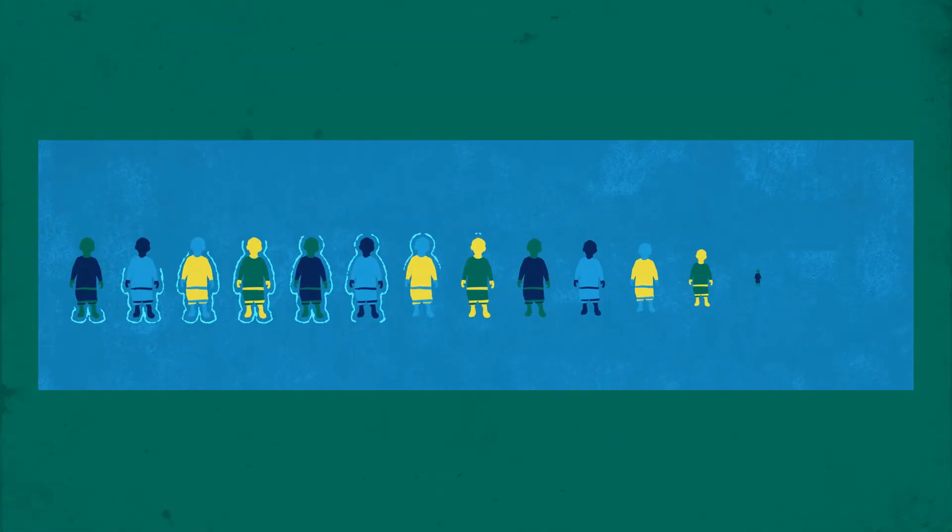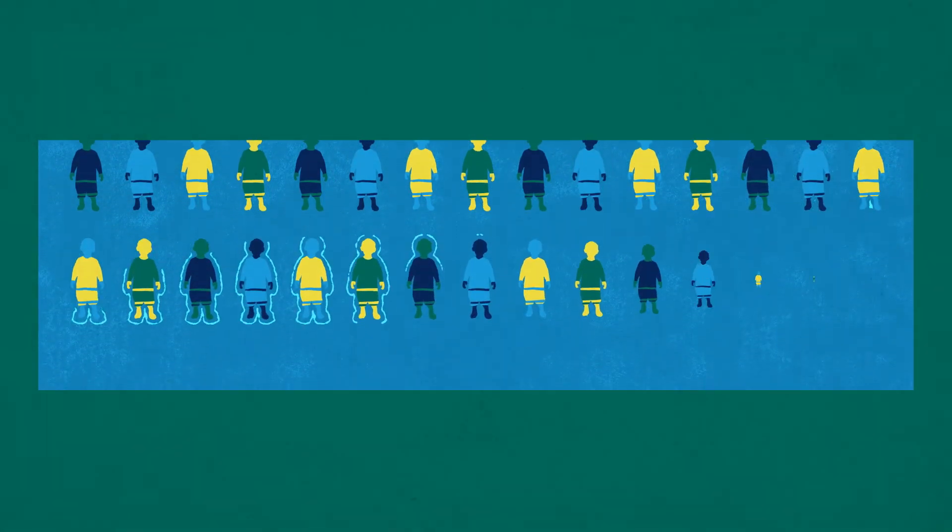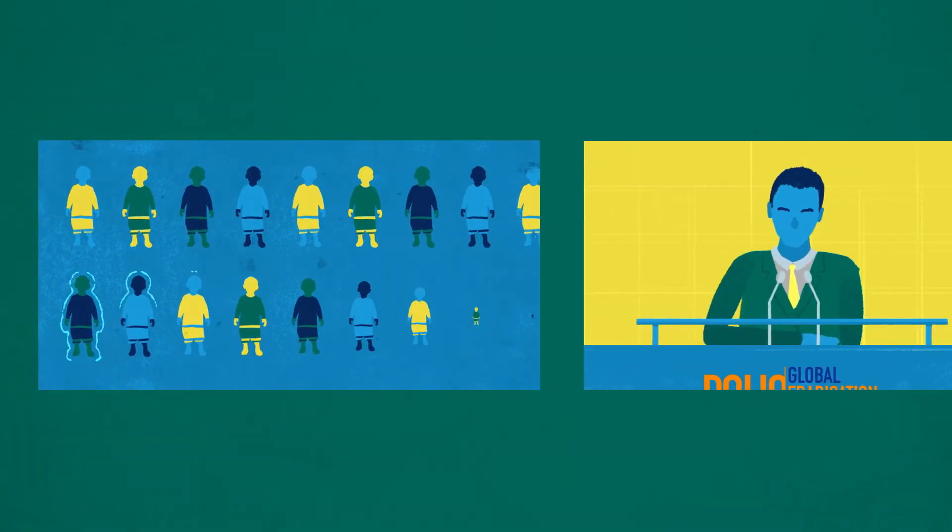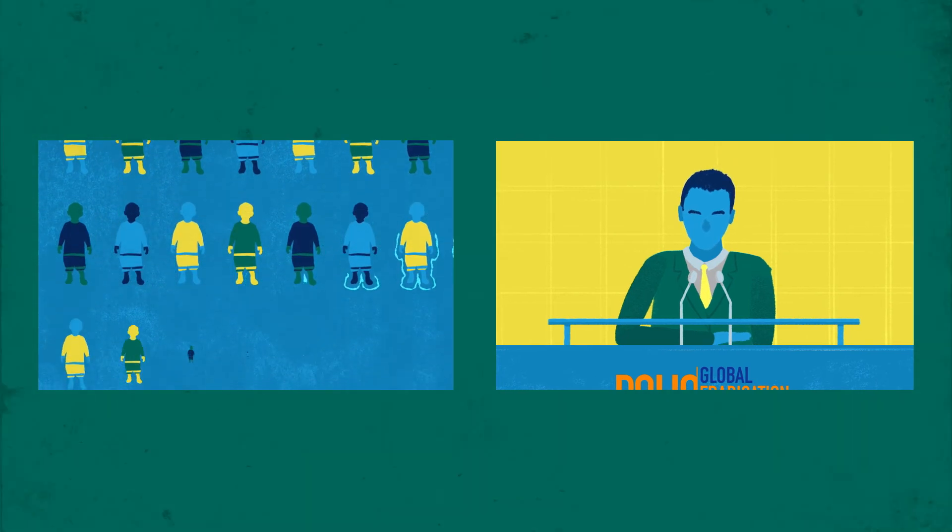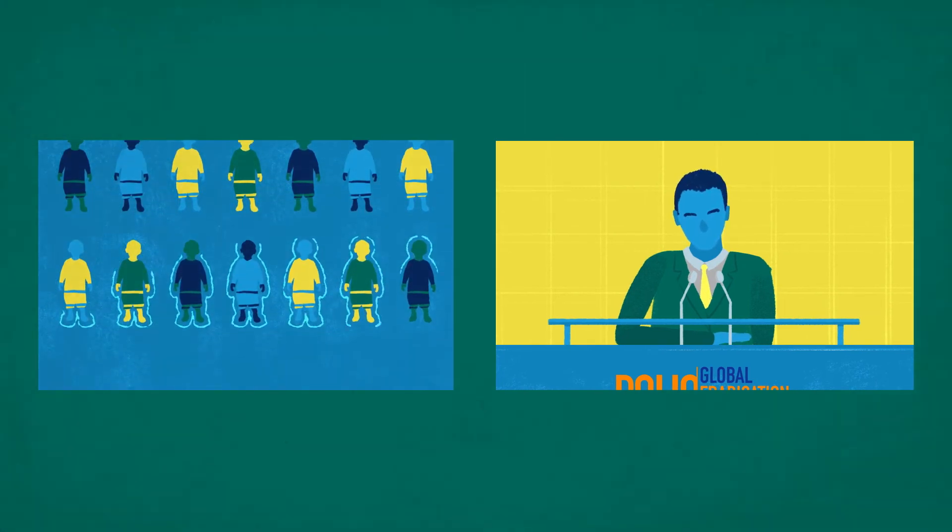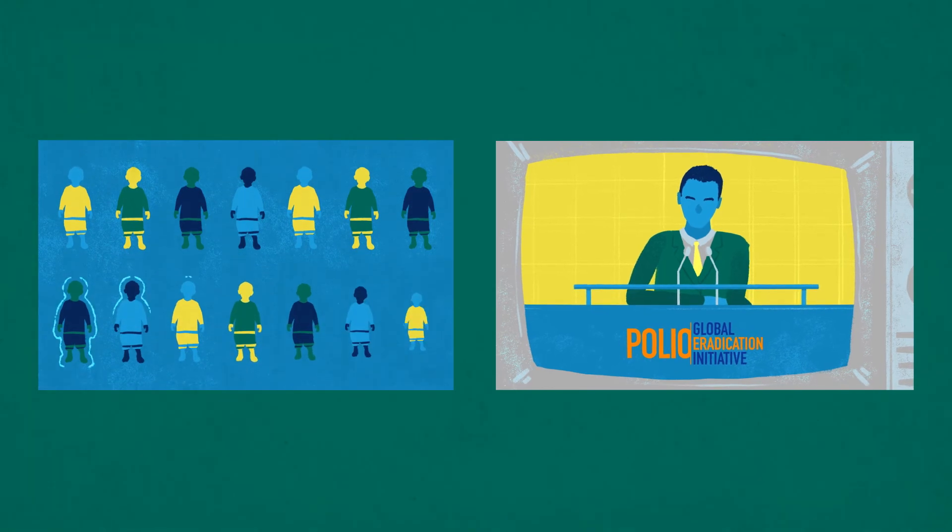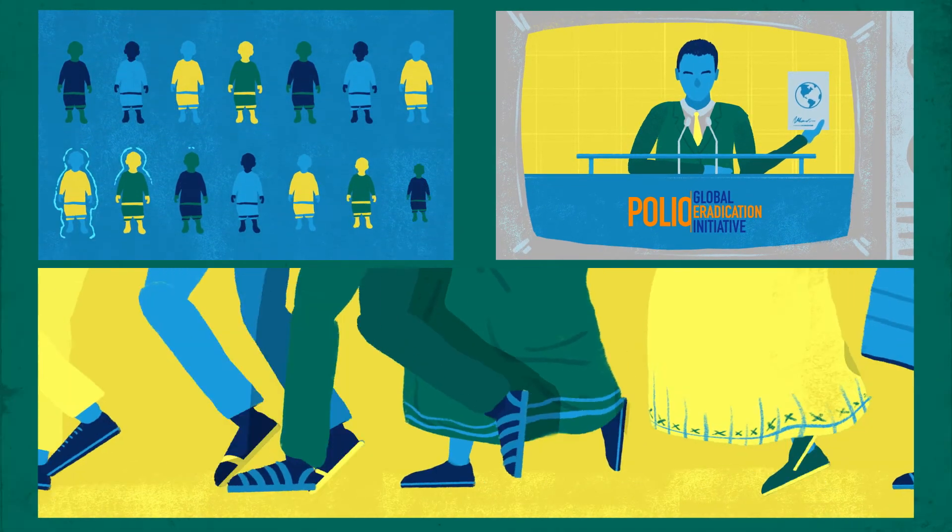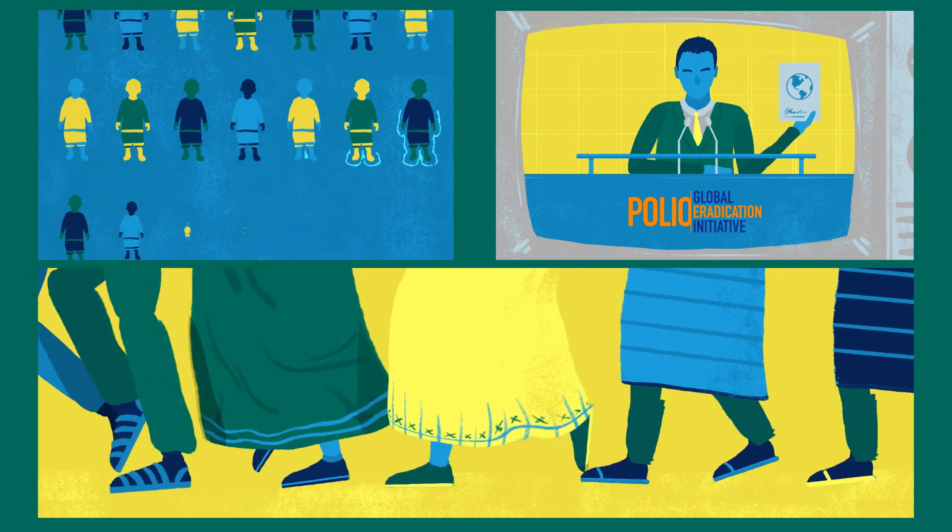Thanks to vaccination campaigns, more than 400 million children are immunized against polio every year. Since the Global Polio Eradication Initiative began in 1988, more than 16 million people are walking who would otherwise have been paralyzed for life.